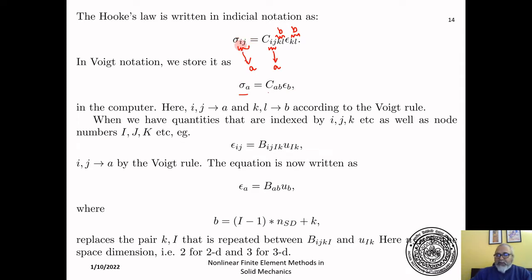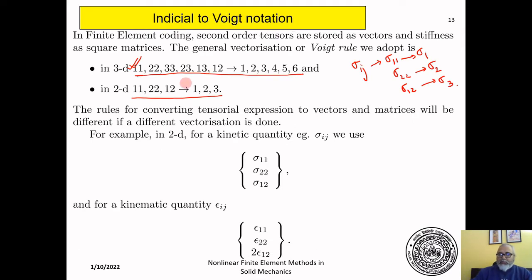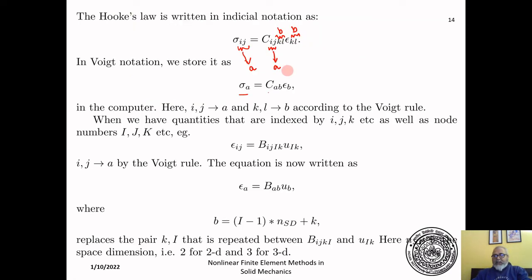The mapping is: if i-j is 1-1, it maps to 1; if i-j is 2-3, it maps to 4; and so on. Depending on the value of k-l, we know the mapping to use, and based on that mapping, this can be written down right away in Voigt notation.